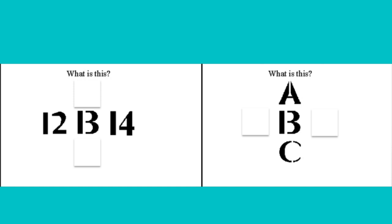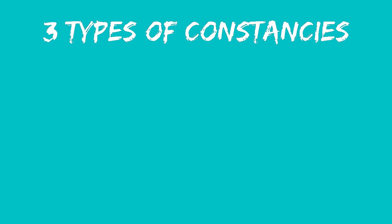The next thing I'll talk about is related to memory. If you look at the middle item, it is surrounded by letters and numbers, and it looks like a B or like a 13, depending on what is around it. Even though it's the exact same sensory stimulus, due to the context we understand and interpret it differently. If you look at A and C around it, it looks like a B; if you look at 12 and 14, it looks like 13. So depending on what is around it, we interpret it based on context.